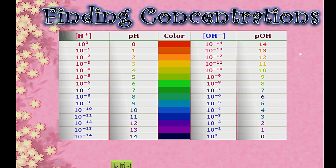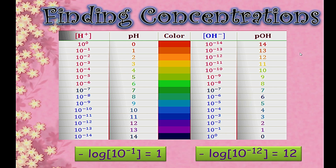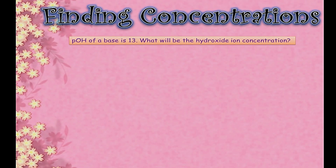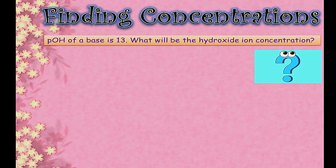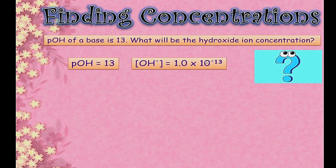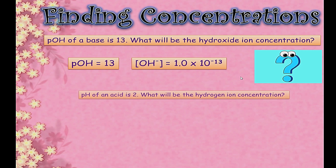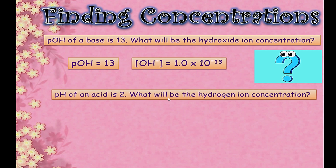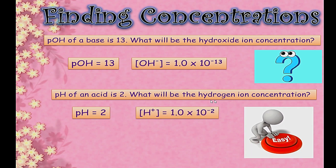Here's how to find concentration directly from given values. If the pOH of a base is 13, then the hydroxide ion concentration is simply 1 × 10⁻¹³. If the pH of an acid is 2, then the hydrogen ion concentration is 1 × 10⁻². It is very easy to state the concentration of hydrogen or hydroxide ions directly from whole-number pH or pOH values.